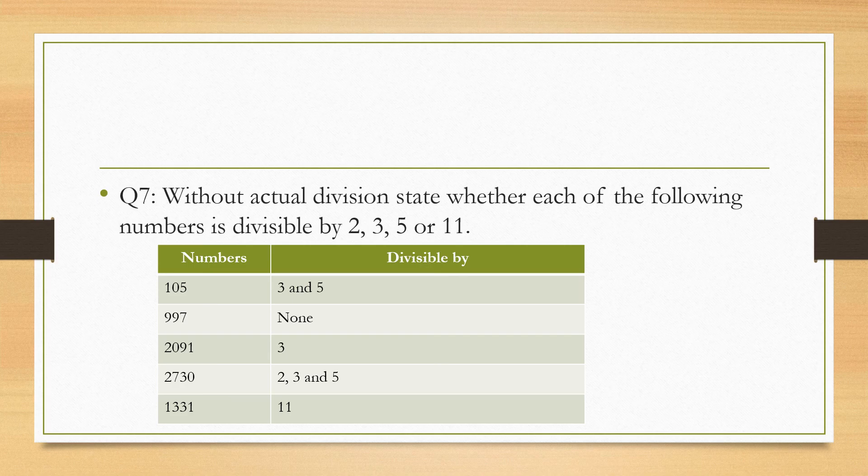Now for divisibility of 11, we need to check the alternate numbers. For example, 1 plus 3 equals 4 and 3 plus 1 equals 4, 4 minus 4 equals 0, which is a multiple of 11, so yes it is divisible by 11. It is a very tricky question, but you just need to practice.